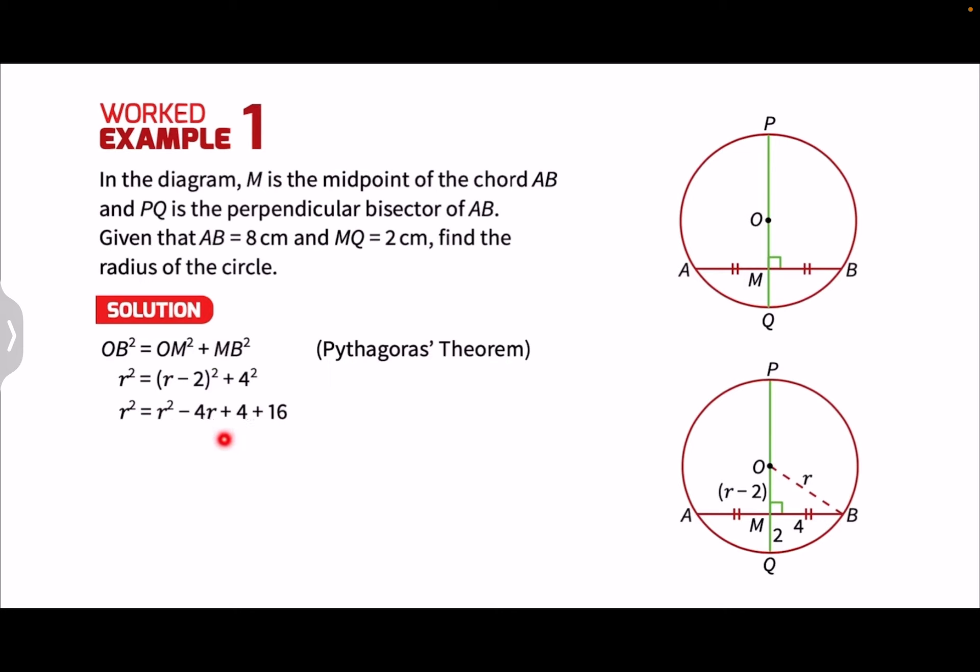Simplifying this equation in a third line, we'll obtain 4R equals 20. Solving for R, we'll obtain R equals 5. So hence, the radius of the circle is 5cm.